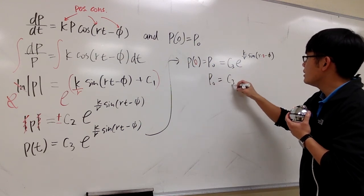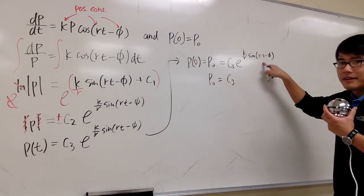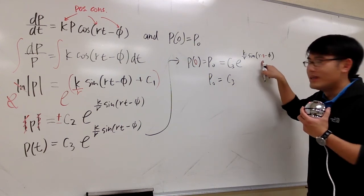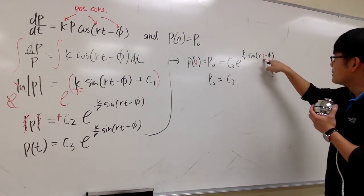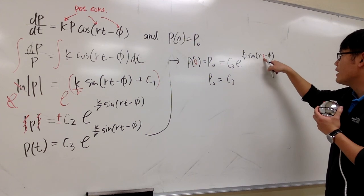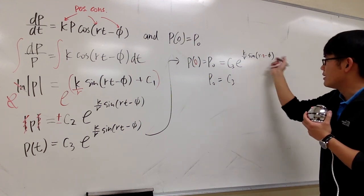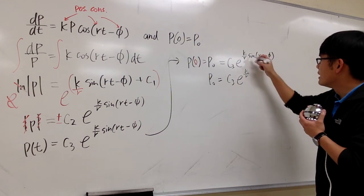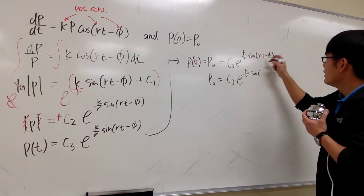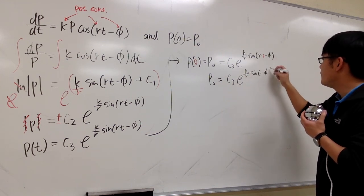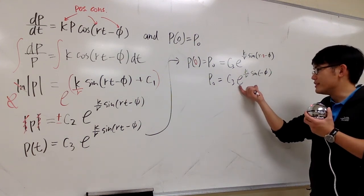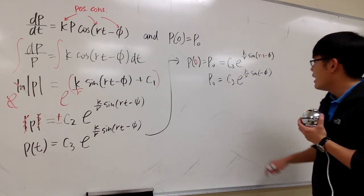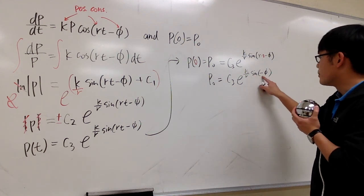I need to figure out what c3 is in terms of p0. p0 is equal to c3. And notice that this is not entirely just like e to the 0 power, because we have r times 0. This is 0. That's okay. But then technically, I still have the other stuff, like e to the k over r, sine of negative v. So unfortunately, this is not just like 1. So I have to do this carefully.